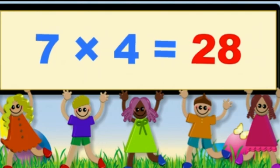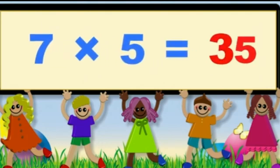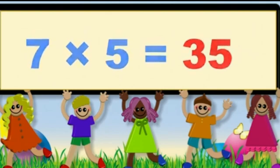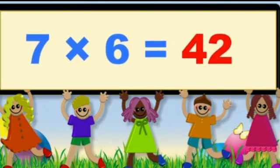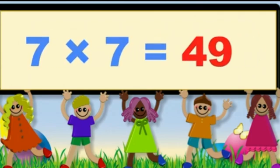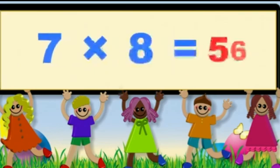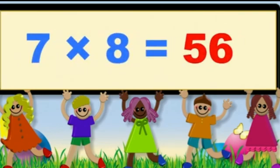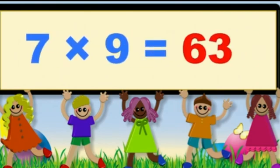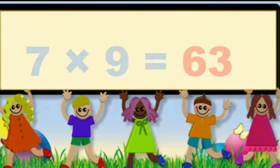7 4s are 28. 7 5s are 35. 7 6s are 42. 7 7s are 49. 7 8s are 56. 7 9s are 63. 7 10s are 70.